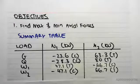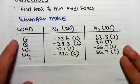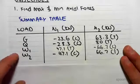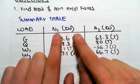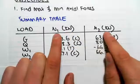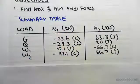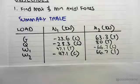So we have load: dead, live, wind case 1, wind case 2, axial in member 1 in kilonewtons, axial in member 2 in kilonewtons. Just to flick through everything we've done from the dead load.